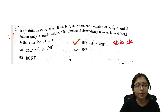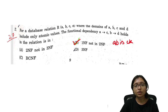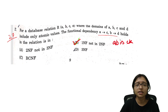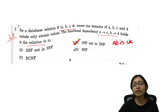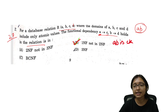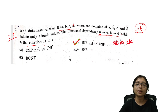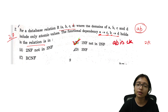Question number 27: Given dependencies with attributes ABCD, the candidate key is AB. A implies B is a partial dependency, and A implies C is also a partial dependency, and B implies D is also a partial dependency. Since partial dependencies exist, this relation is not in 2NF — it is in 1NF only. Answer: 1NF but not 2NF.